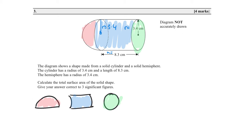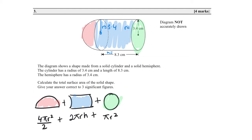For surface area: hemisphere curved surface = 4πr² / 2; curved surface area of cylinder = 2πrh; area of the circular base = πr². We've drawn our shapes, written our formulas, and know to add the three faces together. We have both r and h, so we can substitute.